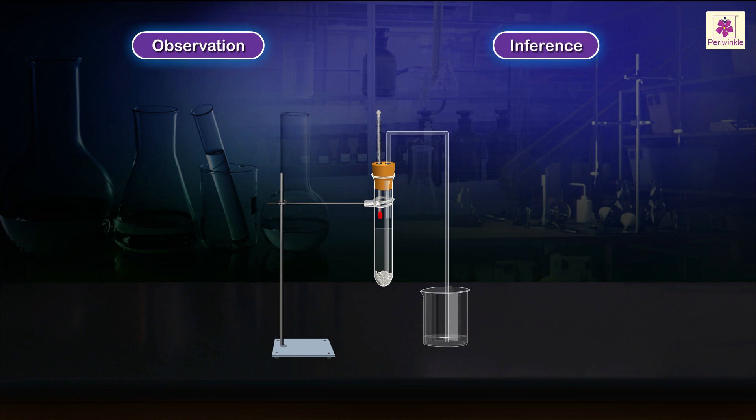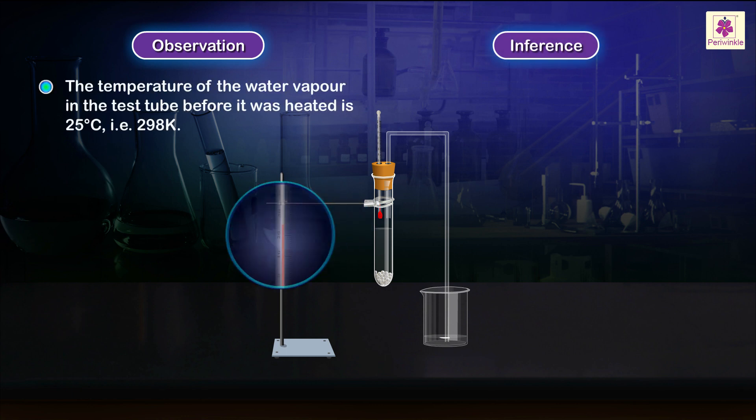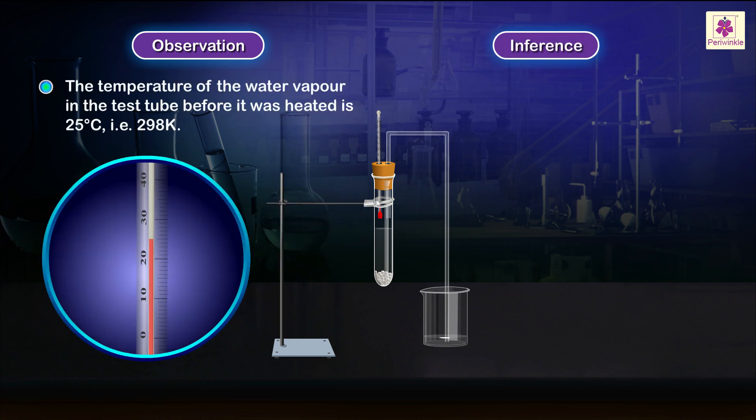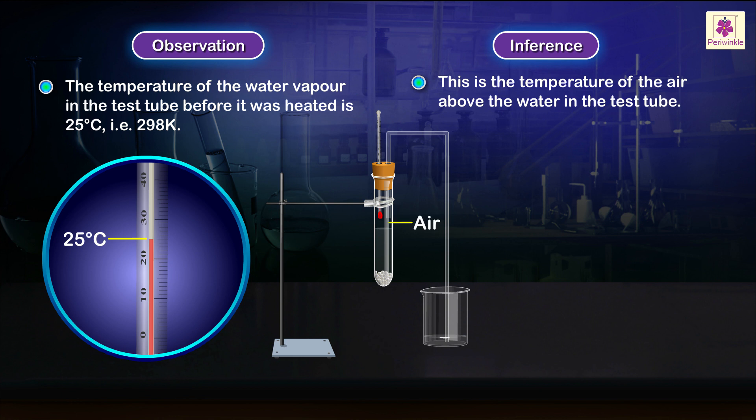Observation and inference. Notice the temperature of the water vapor in the test tube before it was heated is 25 degrees Celsius, that is 298 Kelvin. This is the temperature of the air above the water in the test tube.